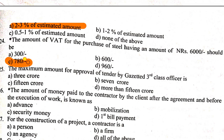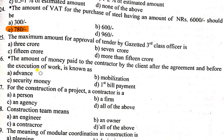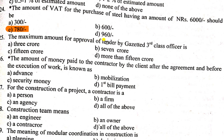Question number 25: The maximum amount of tender approval for a graduated third class officer in Nepal is up to 3 crore. A second class officer can approve up to 7 crore, a first class officer up to 15 crore, and a DG can approve more than 15 crore.